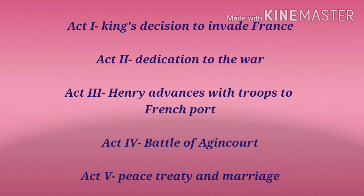The play is divided into five acts. The first act deals with the king and his decision to invade France — he is the rightful heir to the French throne, but when he makes advances, the French Dauphin insults him with a gift of tennis balls. The second act is dedicated to the war: 'All the youth of England are on fire; they sell their pasture now to buy the horse' — showing how every young man of England is preparing for war. There is also a subplot of the Earl of Cambridge's plot to assassinate Henry at Southampton. In Act 3, Henry makes advances with his troops to the French port of Harfleur, where he motivates and encourages his men to fight for a national cause.